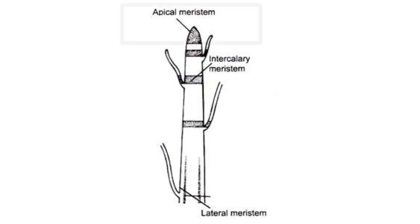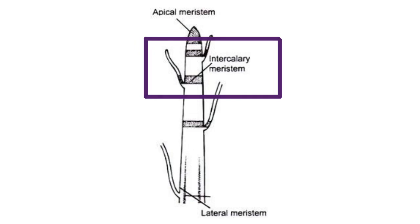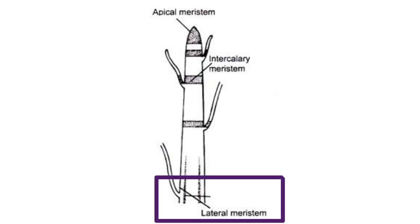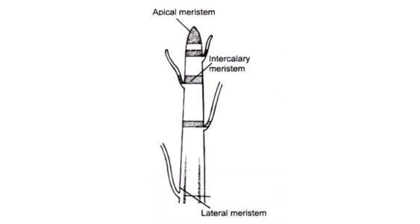Meristematic tissue is divided into three types. Apical meristem is located at the growing tips of stems and roots and helps the plant grow in length. Intercalary meristem is present at the base of leaves and increases the length of internodes. Lateral meristem, also called cambium, increases the width of the stem or root. Meristematic tissue is the only plant tissue that produces new cells during cell division.